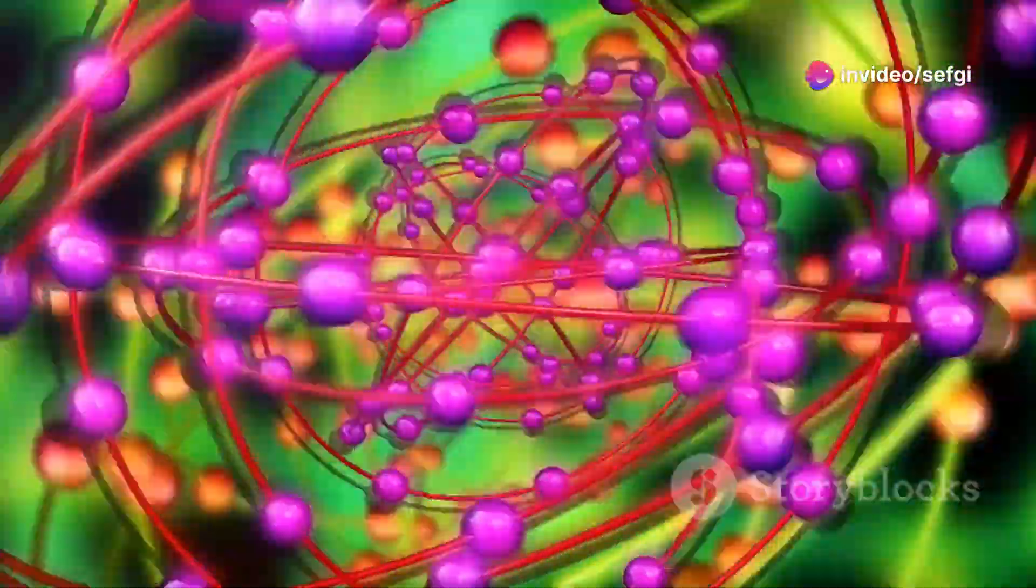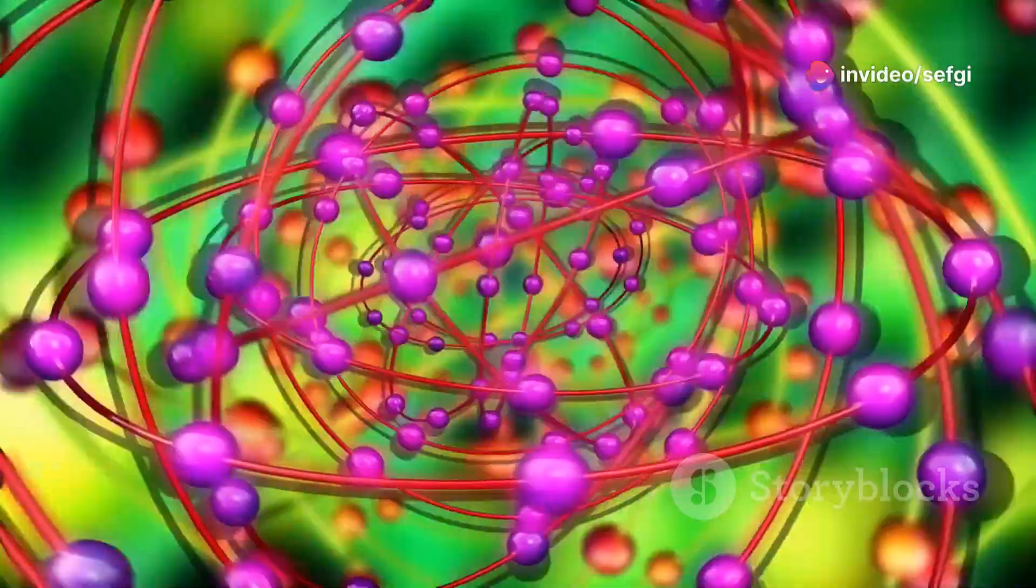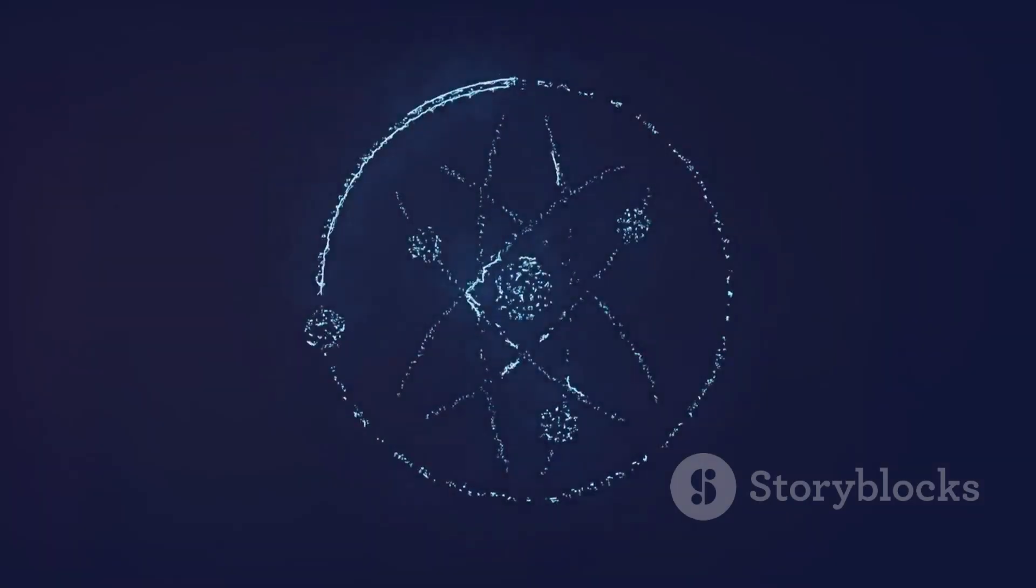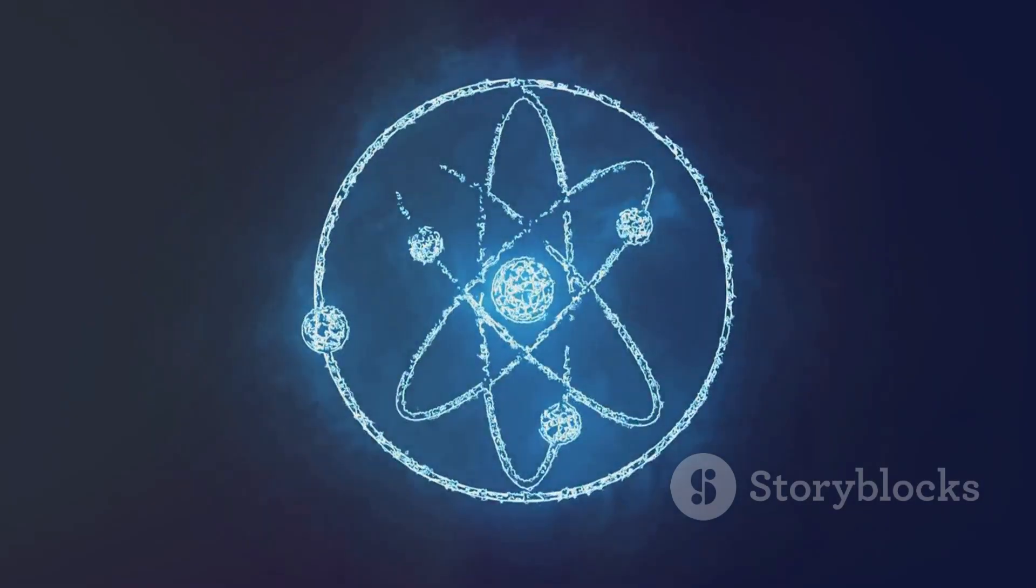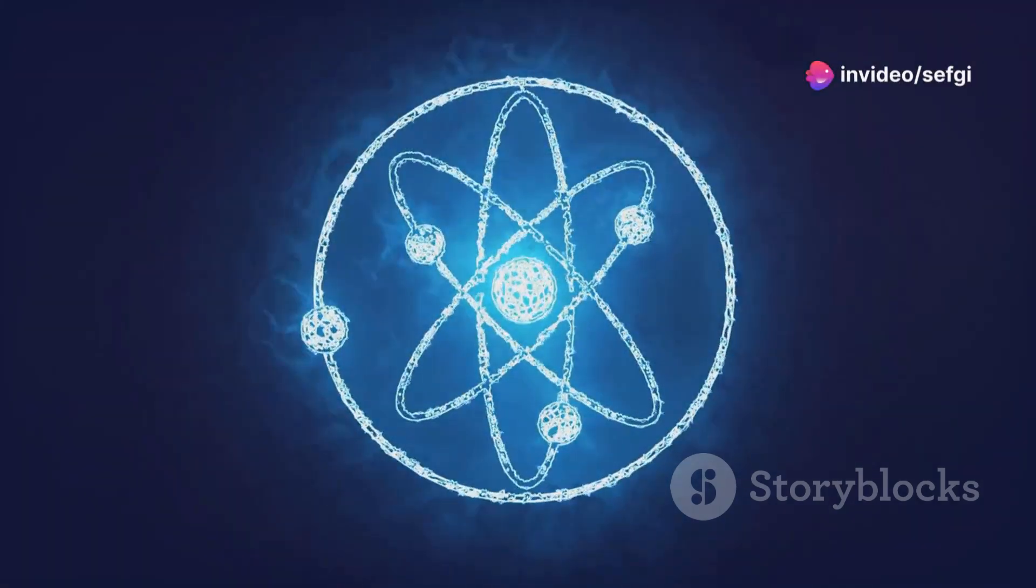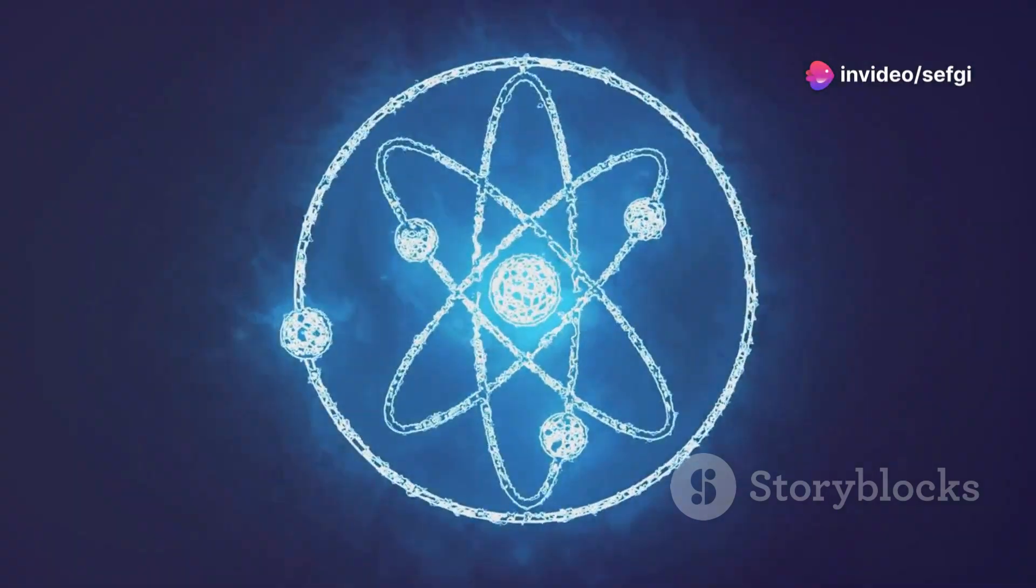Instead, they exist in a cloud-like state, their position and momentum governed by probabilities rather than precise locations. This cloud represents the areas where an electron is most likely to be found, but we can never pinpoint its exact location at any given moment.